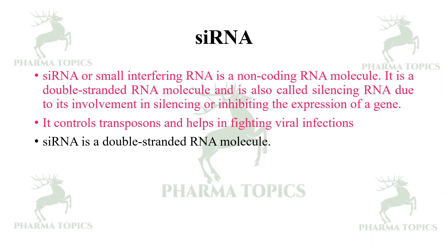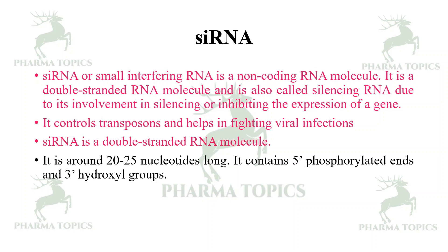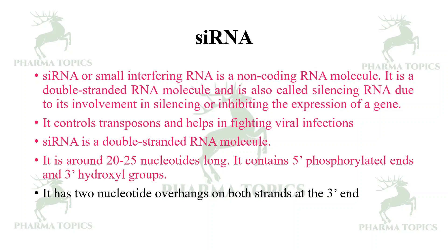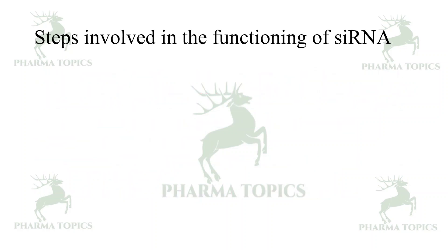siRNA is a double-stranded RNA molecule approximately 20 to 25 nucleotides long. It contains 5-prime phosphorylated ends and 3-prime hydroxyl groups. It has two-nucleotide overhangs on both strands at the 3-prime end.